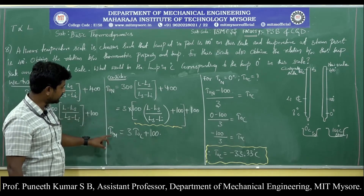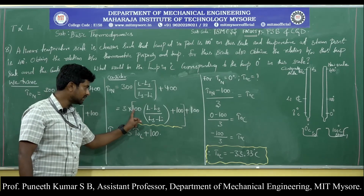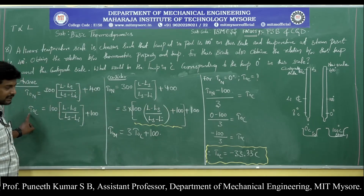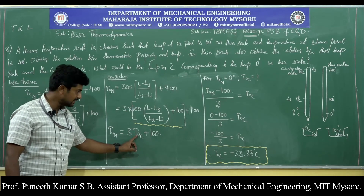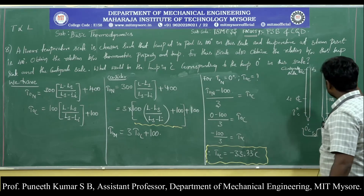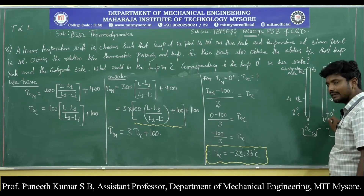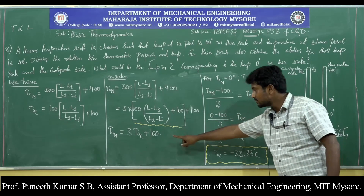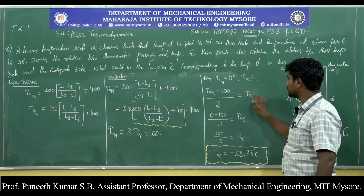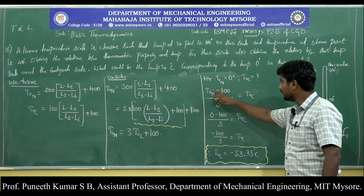After rearranging, we arrive at the relation: T degree N = 3 × T degree C + 100. Here, the expression 100 × (L − L_s) / (L_s − L_i) + 100, which was earlier derived as T degree C, has been substituted in. This gives us the relationship between the new scale and the centigrade scale. Coming to the final part, the author asks: when the new scale reads 0 degrees, what is the centigrade reading? We rearrange the formula to isolate T degree C when T degree N = 0.